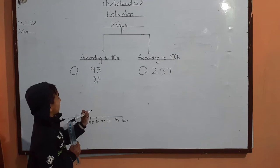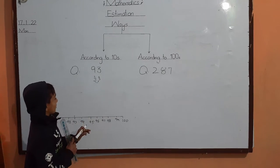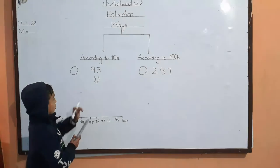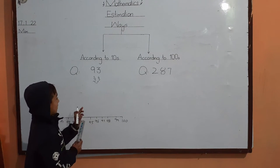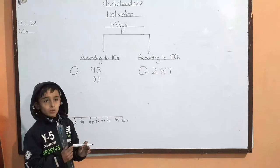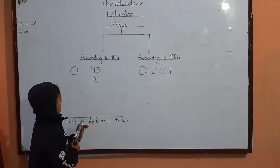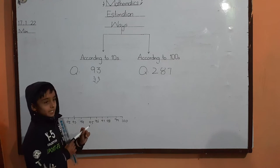Fifth step. Arrow keompa wala digit dekhna greater than hai. Greater than five to one add karayenge. Agar less than five to one nahi add karayenge.